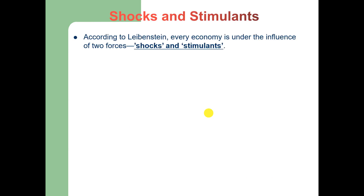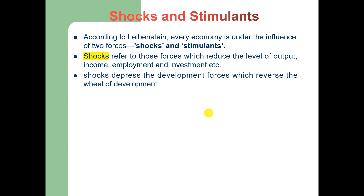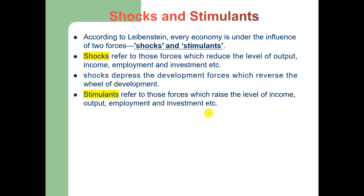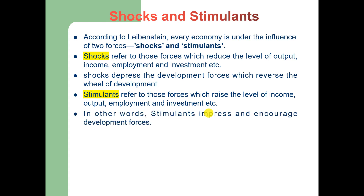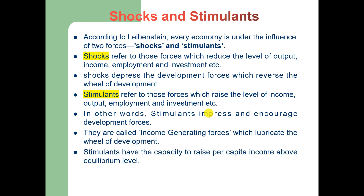According to Harvey Levenstein, there are two forces in underdeveloped economies: shocks and stimulants. Shocks refer to those forces which reduce the level of output, employment, income, and investment — they depress development forces and reverse the wheel of development. On the other hand, stimulants refer to those forces which raise the level of income, employment, output, and investment, and they encourage development forces. We can say that shocks are negative forces and stimulants are positive forces.